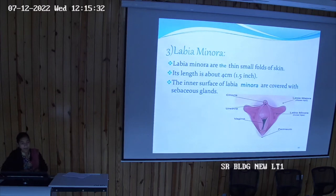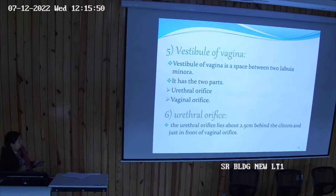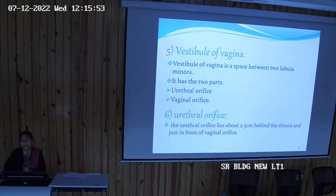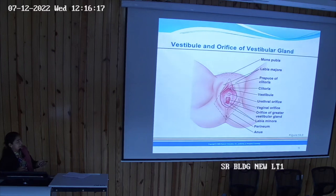The minor lip on the upper end has the clitoris. The clitoris is an erectile organ which is homologous with the male reproductive part, the penis. The vestibule of the vagina bears two orifices: the urethral orifice and the vaginal orifice. The urethral orifice is behind the clitoris — first comes the clitoris, then the urethral orifice, then the vaginal orifice — so it lies between the clitoris and the vaginal orifice.